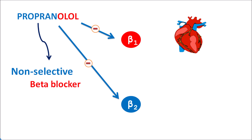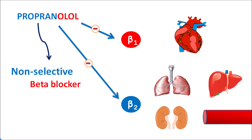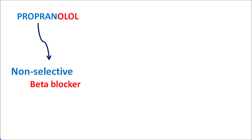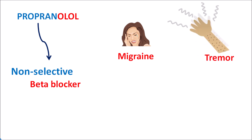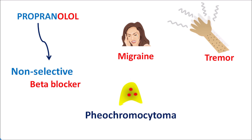By blocking beta-2 receptors, propranolol can affect many types of organs — lungs, liver, kidney, and blood vessels. But because of this non-selectivity, propranolol can be used in various clinical conditions. It can be used in migraine prophylaxis, where severe headache may be associated with sympathetic activation. It can also be used in the management of pathological tremor, which is again controlled by inactivation of the sympathetic system. It can be used during surgical removal of pheochromocytoma — an adrenal tumor — where released catecholamines activate beta receptors that propranolol can block. This drug can also be used in the treatment of hypertrophic cardiomyopathy where ventricular walls are thickened; propranolol reduces cardiac work thereby increasing cardiac functionality.